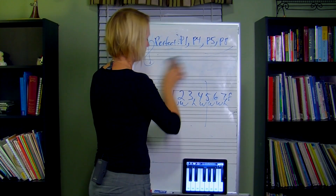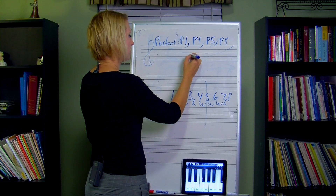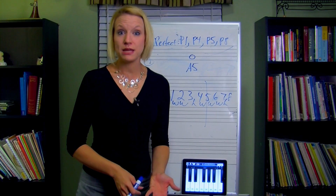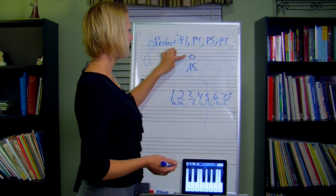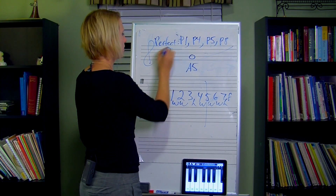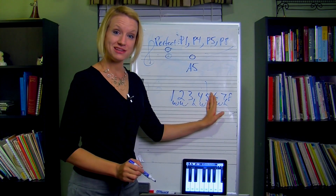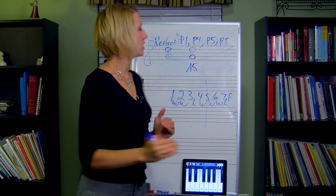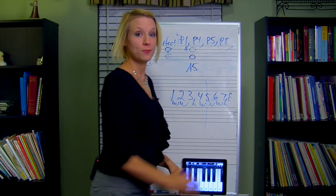Now let's do some examples using sharps. From G, let's build an augmented fifth. First find the perfect fifth: in the key of G there's an F sharp, and the fifth is just D — no D sharp. So G to D is the perfect fifth. To make that augmented, we add a sharp to the top note. From G to D sharp is the augmented fifth.